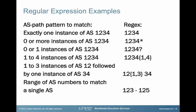Starting with basic examples: to match AS1234, just use 1234. To match zero or more instances of AS1234, use 1234*. Zero or one would be 1234?. One to four instances of AS1234 uses the curly-brace notation. One to three instances of AS12 followed by one instance of AS34 shows how you can bundle these together for complex match patterns. Lastly, a range of AS numbers — for example, this regular expression would match AS123, 124, and 125.